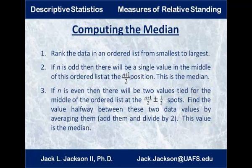How do we compute the median? The first thing you want to do is rank the data in an ordered list from smallest to largest. It's actually a little different depending on whether n is an even or odd number — remember n is the number of items in your sample. If n is odd, there will be a single number in the middle that is the same distance from the maximum as from the minimum. That value will be the median. Notice if you take n plus 1 and divide by 2, that gives you the position number for the median. For example, if you had five data points, 5 plus 1 is 6, divided by 2 is 3 — so the third value from the top is also the third from the bottom, and that will be the median.